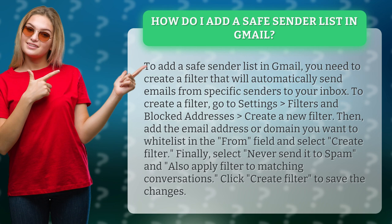To create a filter, go to Settings, then Filters and Blocked Addresses, and select Create a New Filter. Then add the email address or domain you want to whitelist in the From field and select Create Filter.